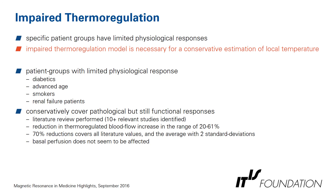Impaired thermoregulation is necessary for a conservative estimation of local temperature for specific patient groups with limited physiological responses. These include diabetics, advanced age patients, smokers, and renal failure patients. We performed a literature review and concluded that a 70% reduction of normal response covers all literature values as well as the average with two standard deviations.